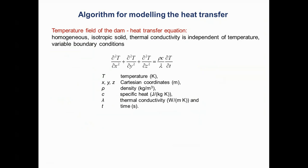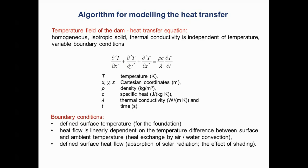The temperature field of the dam was determined by an algorithm for modeling the heat transfer process in a concrete dam. A second-order partial differential equation defining heat transfer in a homogeneous isotropic solid — whose thermal conductivity is independent of temperature — covers spatial and temporal temperature variations, density, specific heat, and thermal conductivity under variable boundary conditions. The basic boundary conditions cover the defined surface temperature, a heat flow linearly dependent on the temperature difference between surface and ambient temperature, and defined surface heat flow.